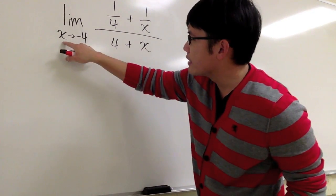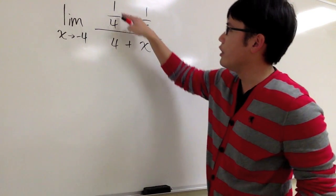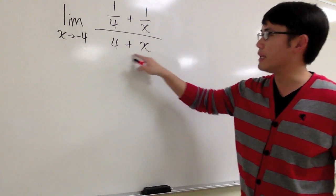Let's deal with this limit, the limit with x approaching negative 4: 1 over 4 plus 1 over x, over 4 plus x.